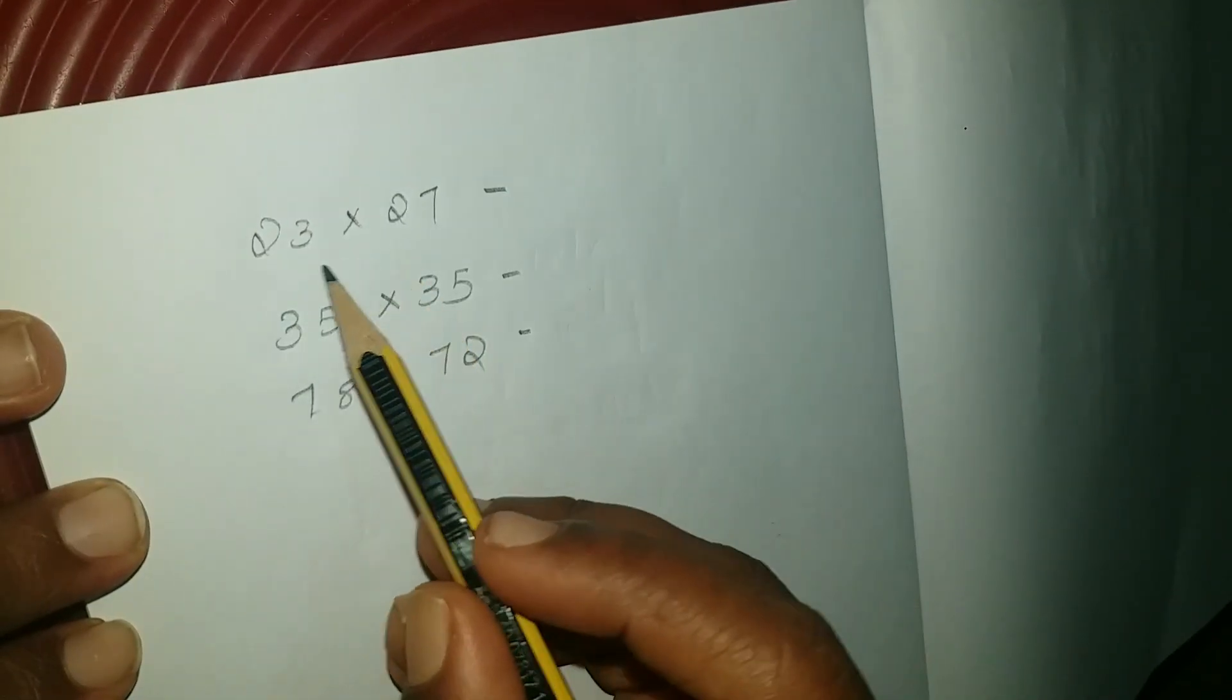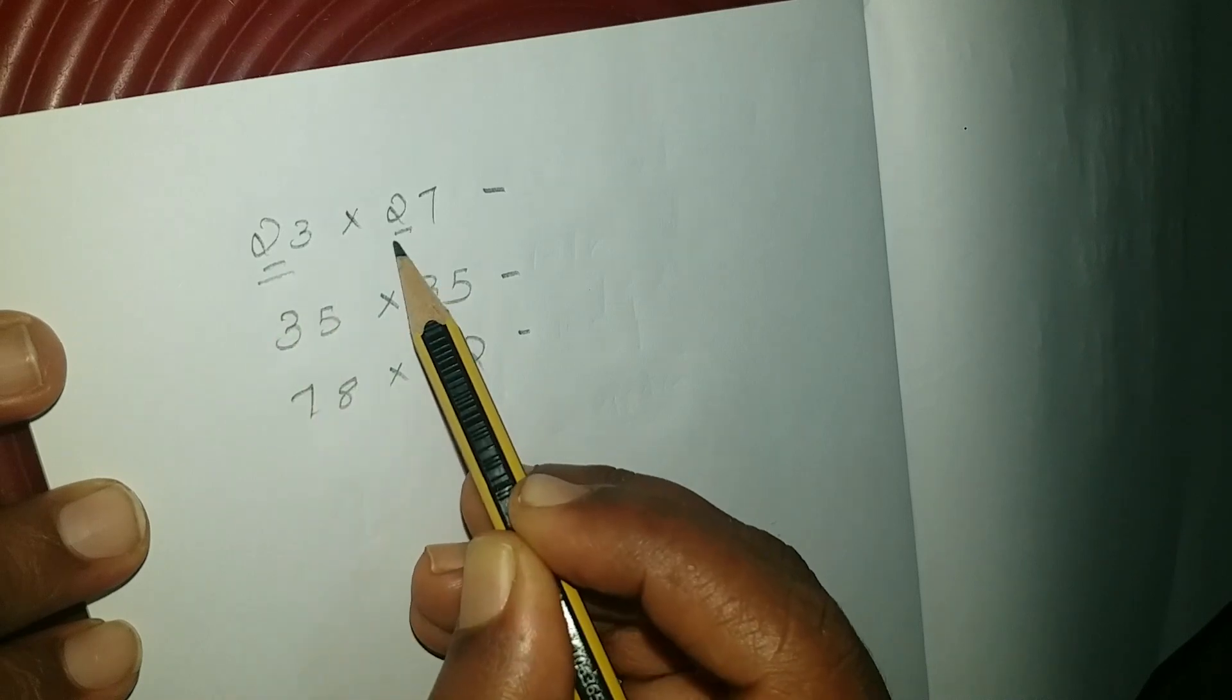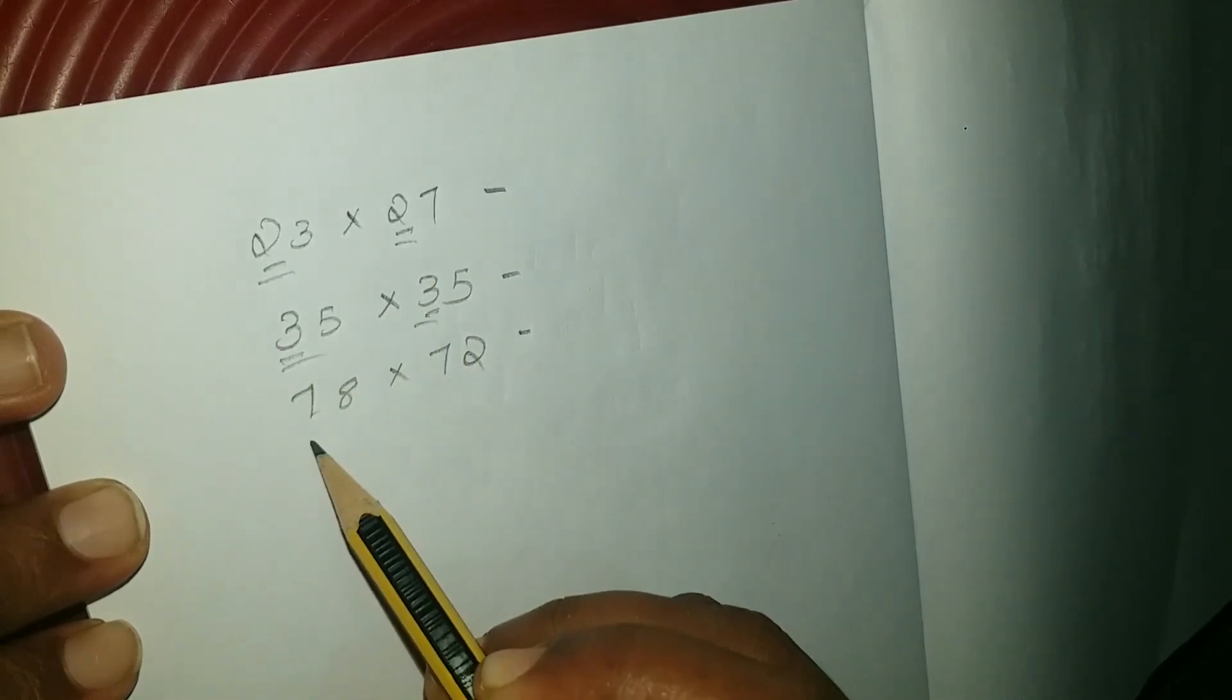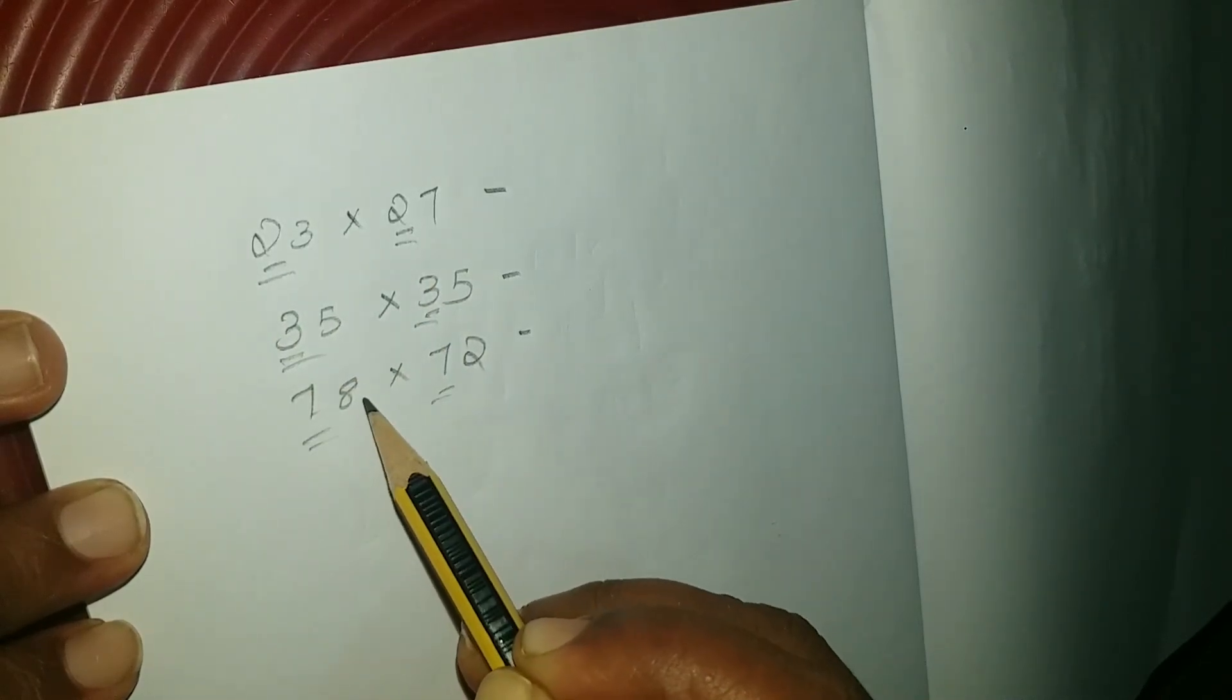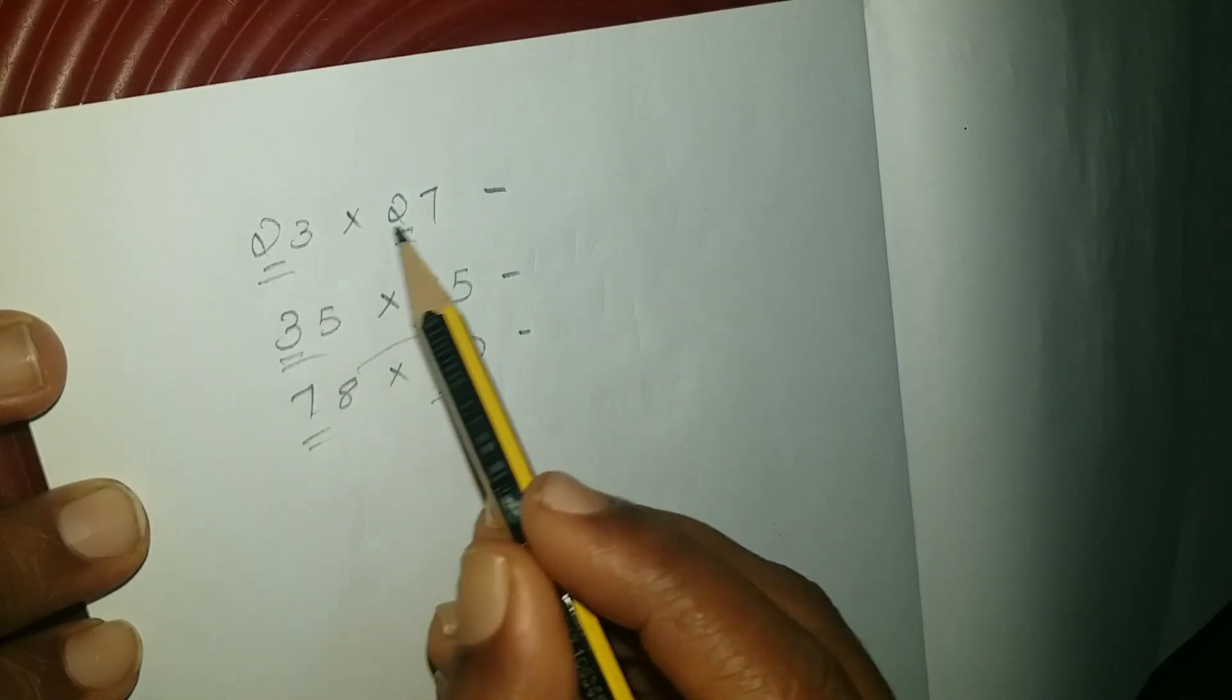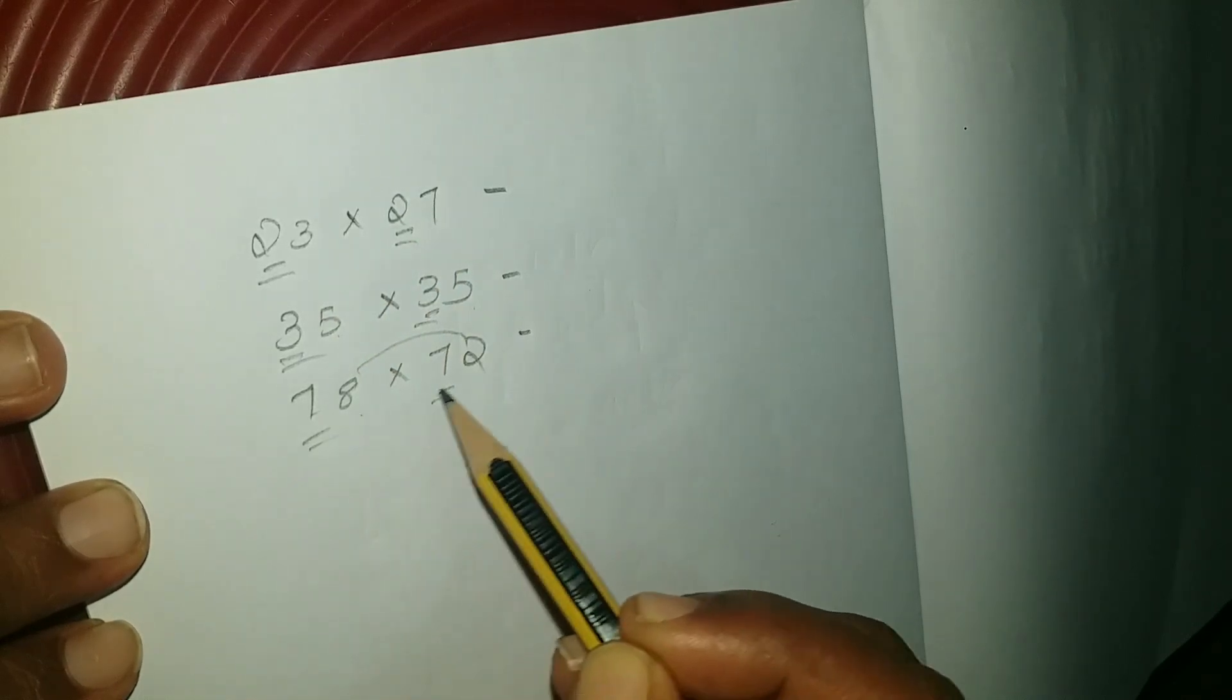We will do the same things. We will do the same things in the 10th place. We will add 10 to the 10th place. We will add 10 to the 10th place. 7 plus 3, 5 plus 5, 8 plus 2.